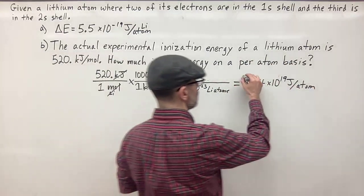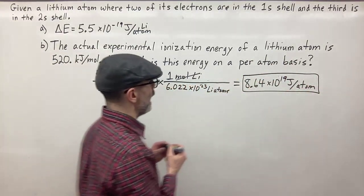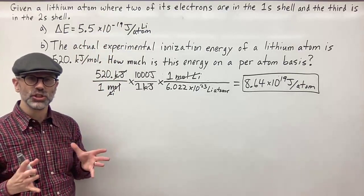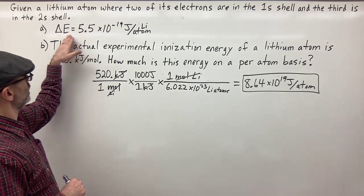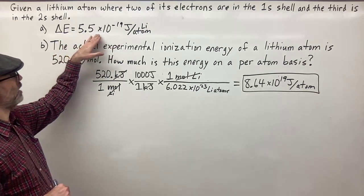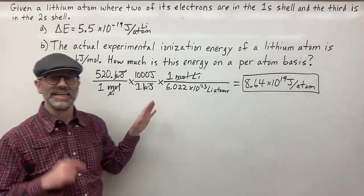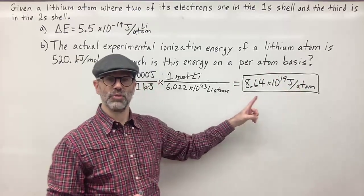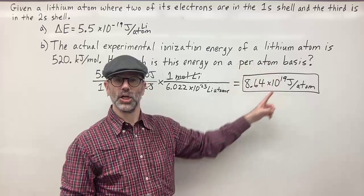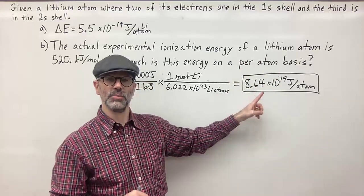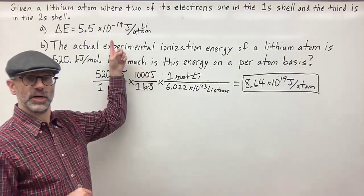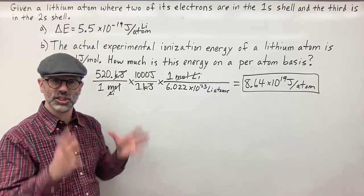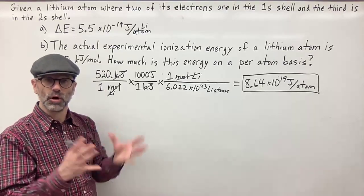You can compare the two results: under the assumption of complete shielding from part A, the ionization energy is 5.5 times 10 to the negative 19 joules. But in reality — the experimental result — it's 8.64 times 10 to the negative 19 joules per atom. You'll notice that it takes more energy experimentally; the ionization energy is larger compared to the value calculated under the assumption of complete shielding of the nucleus by the core electrons.